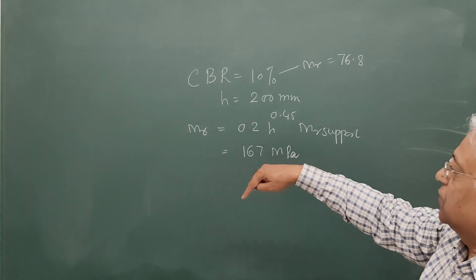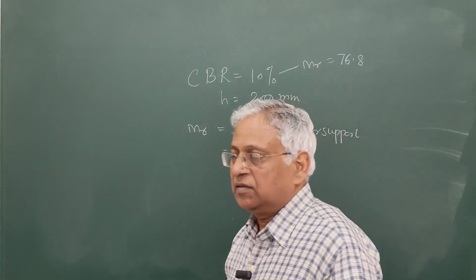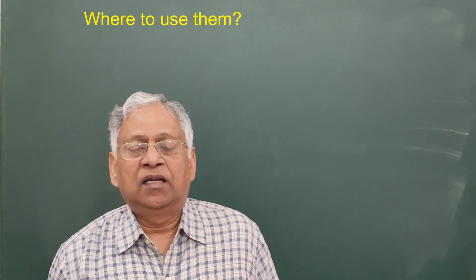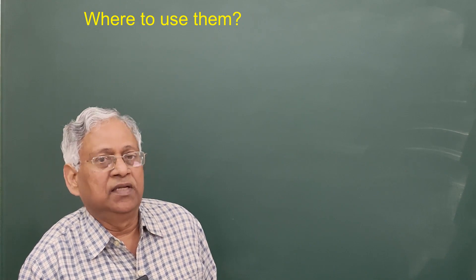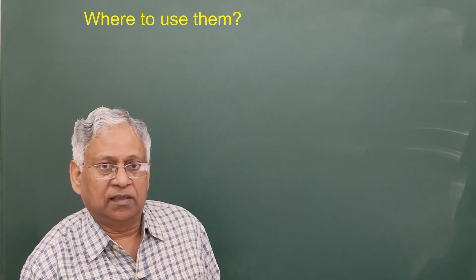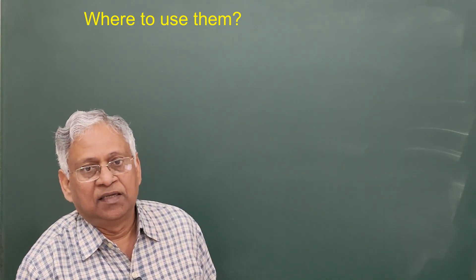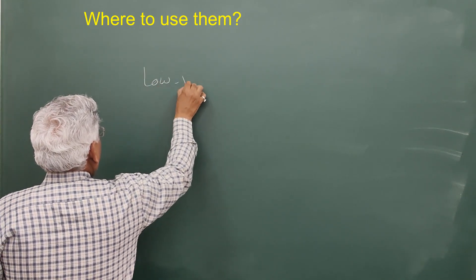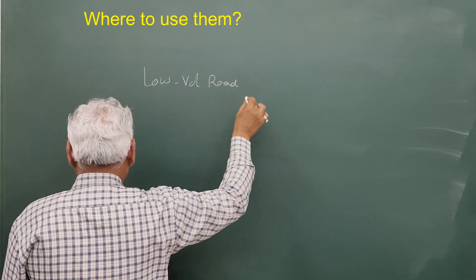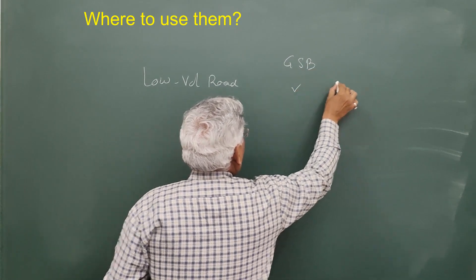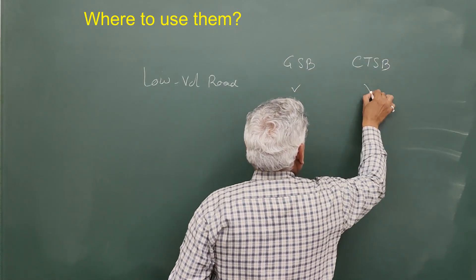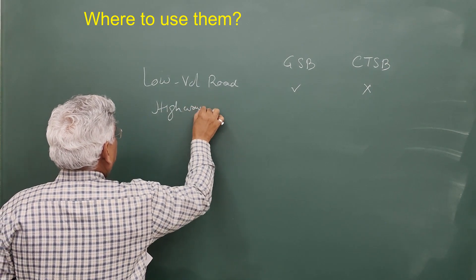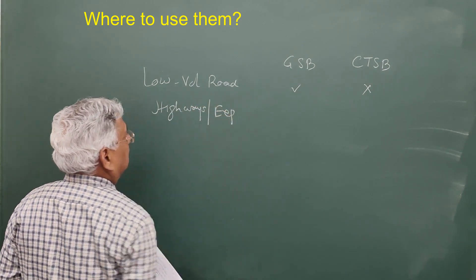Poisson's ratio for GSB is taken as 0.35, and it is also 0.35 for the CTSB layer, which has some effect on stress and strain. Now, knowing the physical and structural differences, the question is where to use each layer. For low volume roads where traffic is low, GSB is a suitable layer, and CTSB would be unnecessarily expensive and therefore not preferred. For high volume roads like highways and expressways, GSB is not suitable.